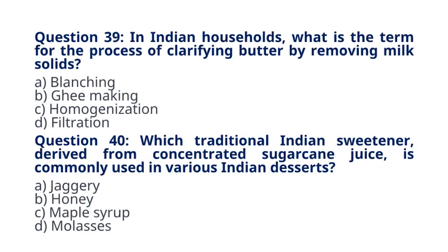Question 39. In Indian households, what is the term for the process of clarifying butter by removing milk solids? A. Blanching. B. Ghee making. C. Homogenization. D. Filtration. The correct answer to question 39 is option B. Ghee making. Explanation. Ghee making involves clarifying butter by heating it and removing the milk solids, resulting in a pure and clarified form of butter.